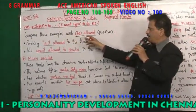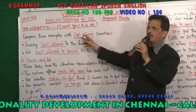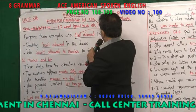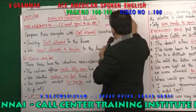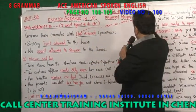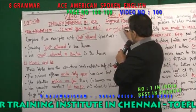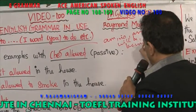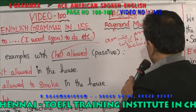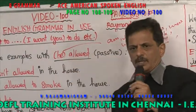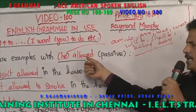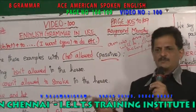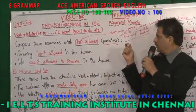Now compare these examples with 'BE allowed.' What is BE? BE includes: am, is, are, was, were, will be, shall be, being, been. All these are called BE verbs. So BE plus past participle — they are called passive sentences.